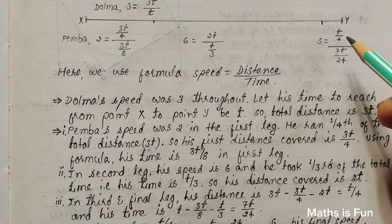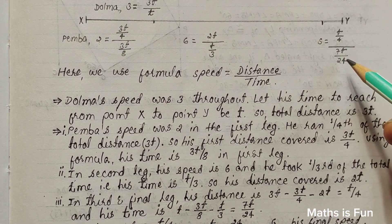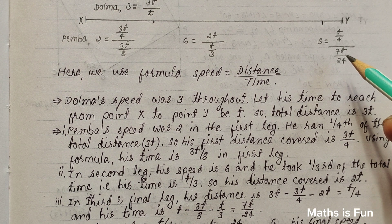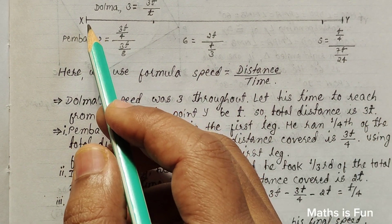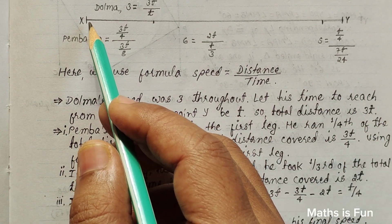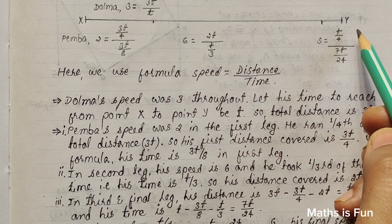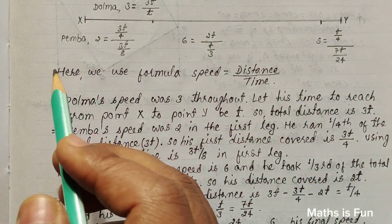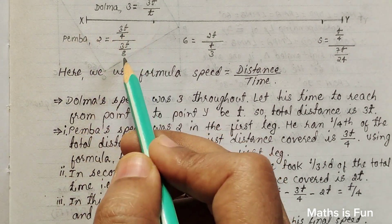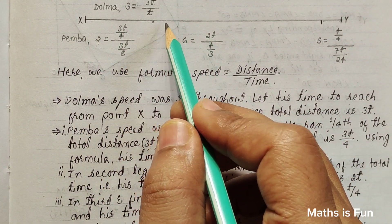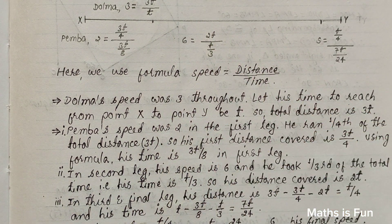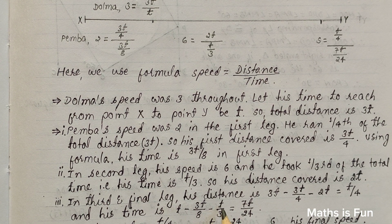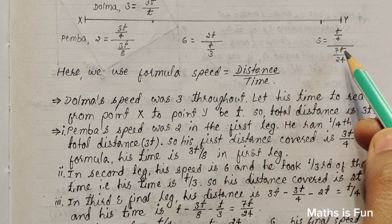After finding out his distance in the third leg, we have to find out his time in the third leg. So the time in the third leg can be found out using the same way, that is we will subtract the time taken from X to Y, that is T, and then from T we can subtract time taken in the first leg, that is 3T over 8, and time taken in the second leg, that is T over 3. So you can see that T minus 3T over 8 minus T over 3 comes out to be 7T over 24.